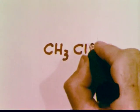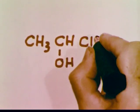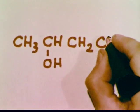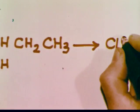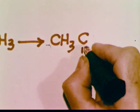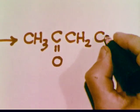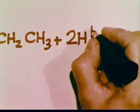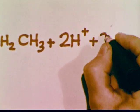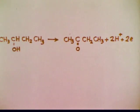We start with the structural formula for 2-butanol. The products of the oxidation are the ketone, plus 2 hydrogen ions, plus 2 electrons. This is the half-reaction for the oxidation of the alcohol.